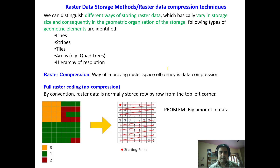Welcome back. We will try to understand raster data storage methods or raster data compression techniques. Raster data is quite voluminous compared to vector data because it is given in the form of pixelated cells and takes a lot of storage. There are different types of data storage which can also compress that data and lessen the burden on storage devices. Raster data storage methods vary in storage size and geometric organization on the basis of geometric elements.